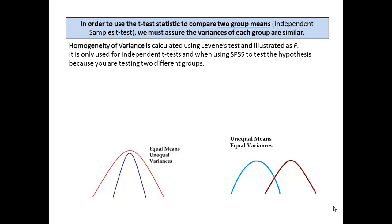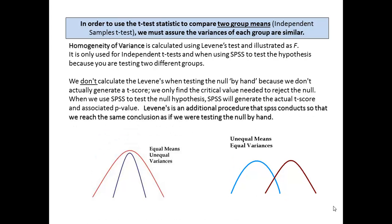We calculate that with a Levene's test, and it's illustrated with the letter F. You'll learn that F is also the representation for ANOVA, and the reason for that is that the Levene's is a special type of ANOVA. We don't usually calculate a Levene's with the by-hand method because we're really only trying to find a critical value along the normal distribution needed to reject the null. When we use SPSS to test the null hypothesis of the t-test, SPSS will generate the actual t-score, the associated p-value, and will compute the Levene's when comparing two different groups. Our result will be the same whether we're testing by hand or using the software.